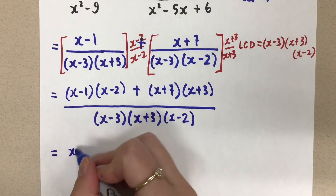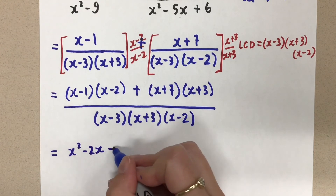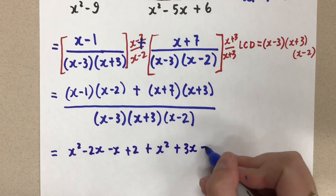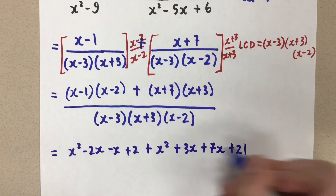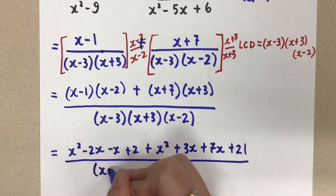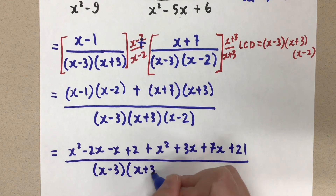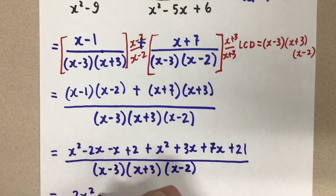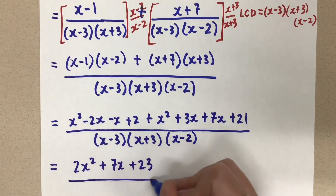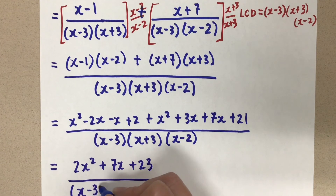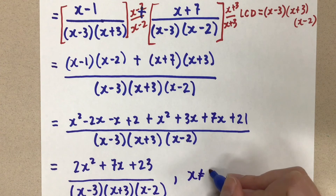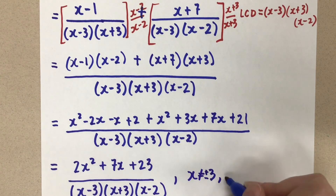So we're going to expand the binomials here, and I've got x squared minus 2x minus x plus 2. And then expand the two binomials here: x squared plus 3x plus 7x plus 21. And that same denominator stays the same all the way through. Now in the numerator, we're going to combine like terms, and when we do that we get 2x squared plus 7x plus 23. In my denominator, I've got x minus 3, x plus 3, and x minus 2. And my restrictions — x can't be positive or negative 3, and positive 2.